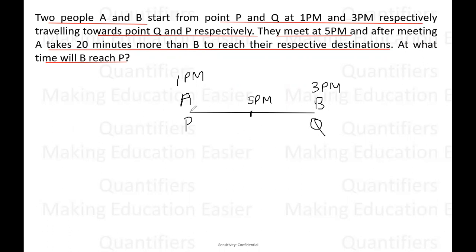Let's assume the distance traveled by A before meeting is X kilometers, and Y kilometers is the distance which B is traveling before meeting. Now you can see to travel X kilometers, A is taking four hours because A starts at 1 PM and they are meeting at 5 PM. So A is traveling for four hours. Similarly to cover Y kilometers, B is traveling for two hours. Now from here we can calculate their speeds. We can say that speed of A, speed is equal to distance upon time, so speed of A will be X by 4. Similarly, speed of B is Y upon 2, distance upon time - distance is Y, time is 2. So we know the speeds of A and B.